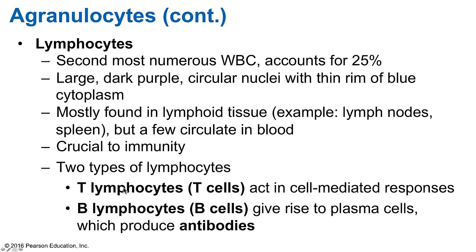There are either 2 or 3 types of lymphocytes depending on the source. T cells and B cells are listed, and the third type is natural killer cells, or NK cells. T lymphocytes directly attack virus-infected cells, fungi, tumor or cancer cells, and some bacteria. They are also responsible for transfusion reactions and rejection of transplanted organs. B lymphocytes give rise to plasma cells, which produce antibodies, and are very effective in destroying bacteria and neutralizing their toxins.